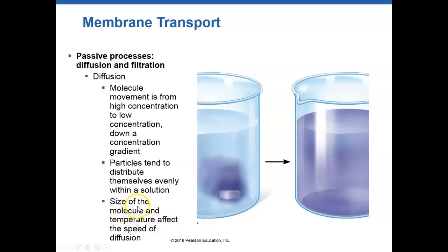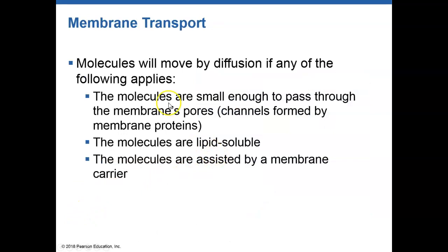Things that affect diffusion: the size of the molecule — larger molecules move slower, smaller molecules move faster — and temperature. A higher temperature means things dissolve faster. Things that move via simple diffusion are typically small and nonpolar. Any molecules that are lipid-soluble are able to move directly through the plasma membrane via diffusion.